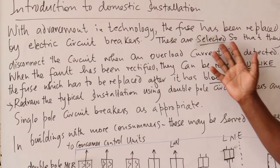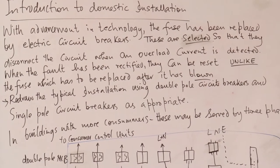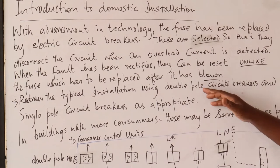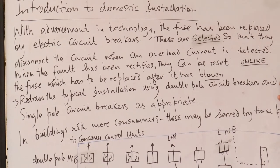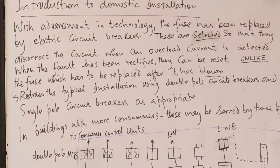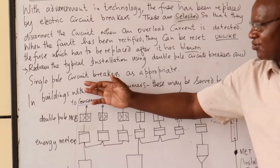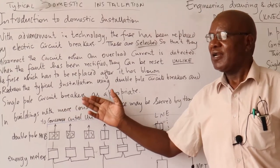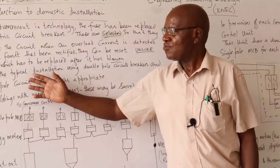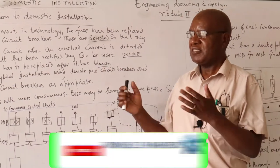Since we are doing a bit of design, I'd like you to redraw that typical installation using the double pole circuit breakers and the single pole circuit breakers. The double pole is used for isolation, and the single pole circuit breakers are used for the final sub-circuits. So as an exercise, try to draw that typical installation using MCBs.